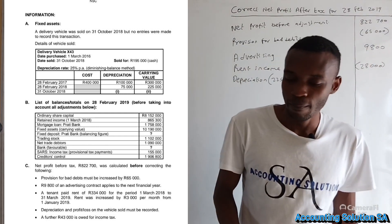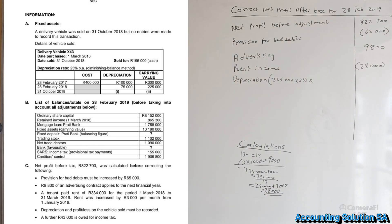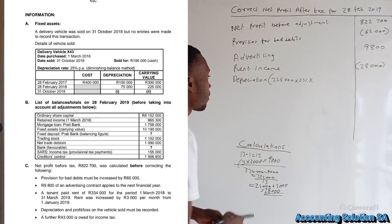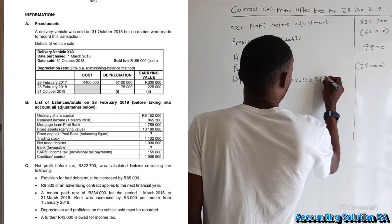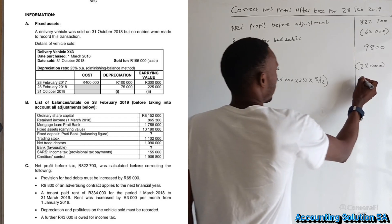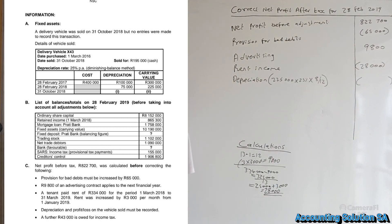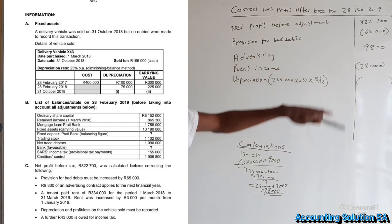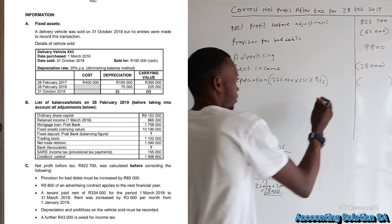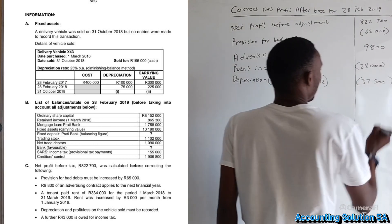We held the vehicle from 1 March 2018 until it was sold on 31 October 2018 — that's 8 months. Depreciation = 225,000 × 25% × 8/12 = 37,500. Since no entry was made, this is an expense — subtract it as a minus 37,500.